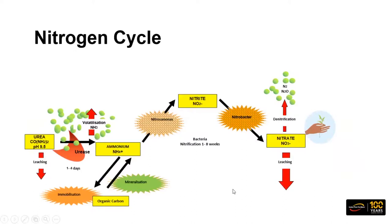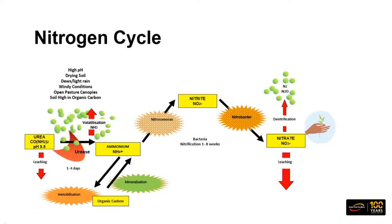To understand where nitrogen fits into the system, we need to understand the nitrogen cycle. This is just a basic diagram. We apply nitrogen primarily in the urea form. Urea will then convert into ammonium nitrate within a few days — the urease enzyme in the soil acts on that urea and hydrolyses it. During that phase, it can go into an unstable phase of ammonia carbonate, which can be lost to the atmosphere if we don't have rainfall within a day or two of application.